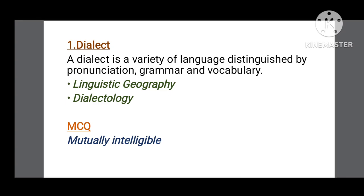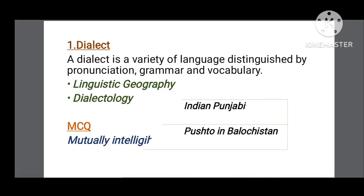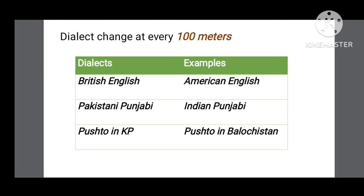The most important point here is ki jitni bhi dialects hai, they are all mutually intelligible — yani ki jitni bhi dialects hai ek language ke, wo sari speakers ek dhusri ko understand kar sakte hai. Dialects change at every hundred meters. For example, British English and American English — though these two dialects are different in terms of grammar, vocabulary, and pronunciation — the speakers of these two dialects understand each other very well. The second example is Pakistani Punjabi and Indian Punjabi.